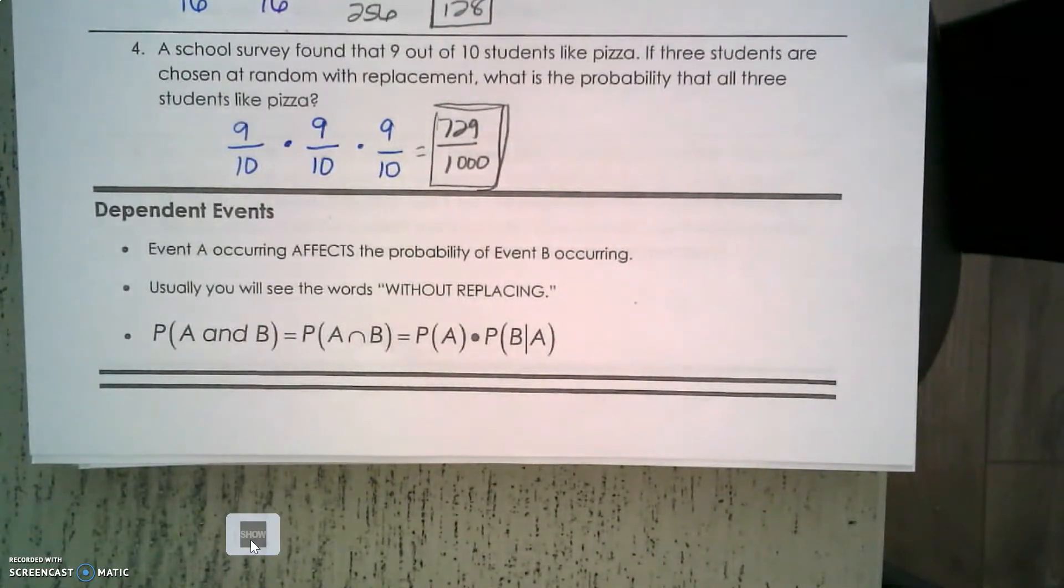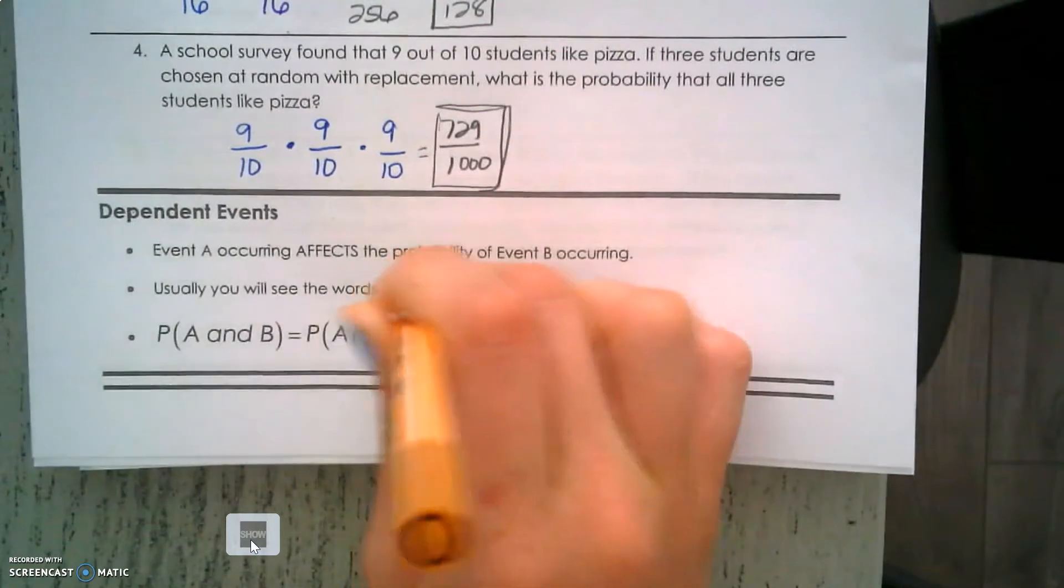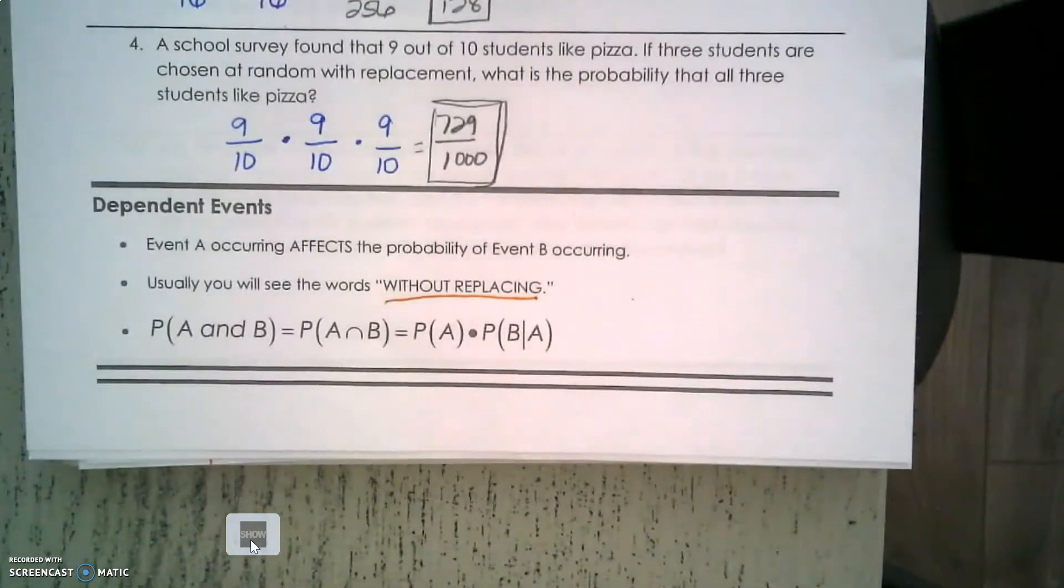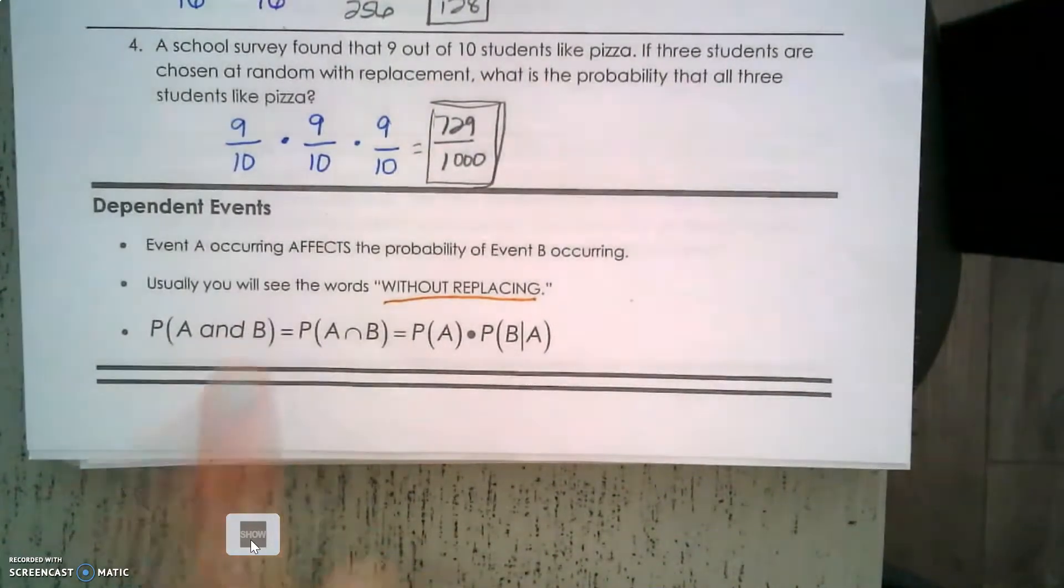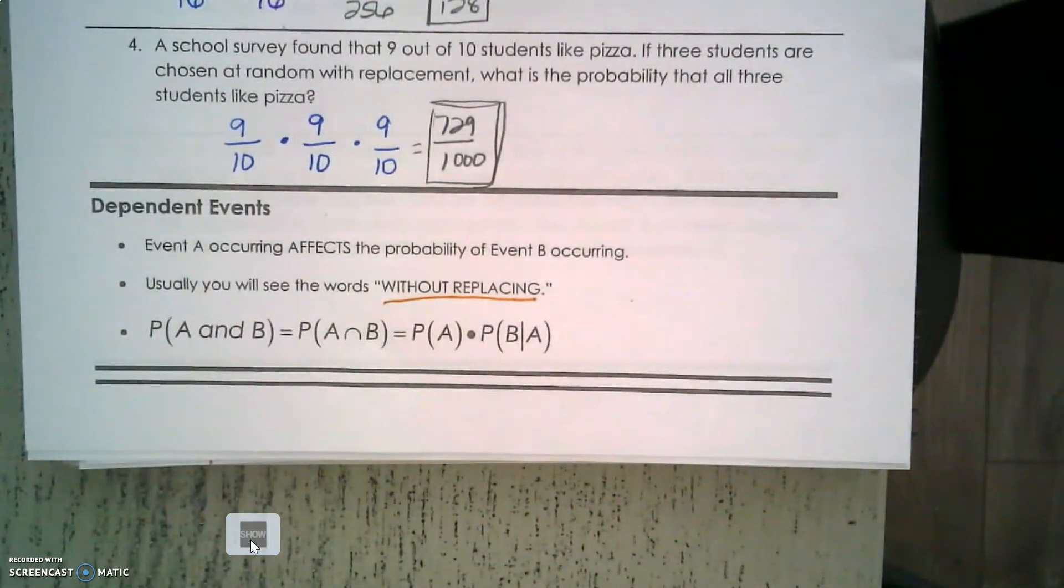Usually you'll see the words 'without replacing' - notice that's a key word we're going to be looking for in these problems. We're still going to see the word 'and', but it's up to you to determine if it's dependent.